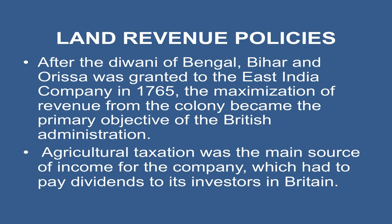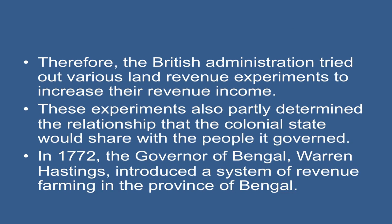After the Diwani of Bengal, Bihar, and Orissa was granted to the East India Company in 1765, the maximization of revenue from the colony became the primary objective of the British administration. Agricultural taxation was the main source of income for the company, which had to pay dividends to its investors in Britain. Therefore, the British administration tried out various land revenue experiments to increase their revenue income. These experiments also partly determined the relationship that the colonial state would share with the people it governed.